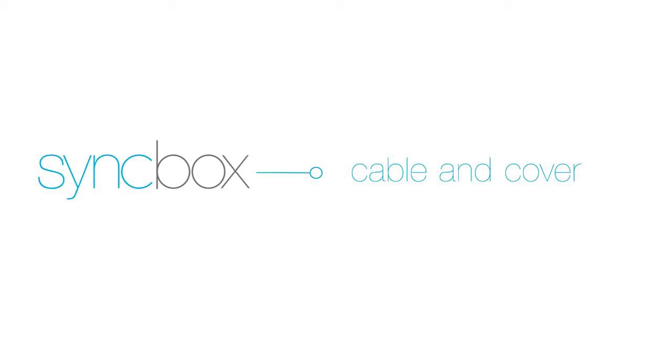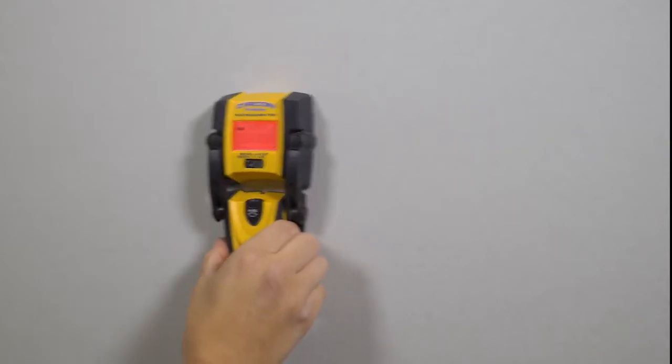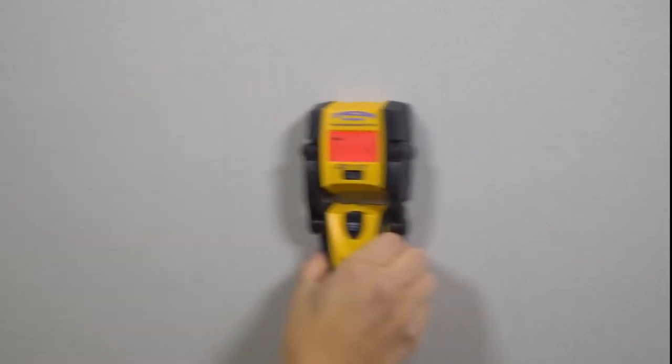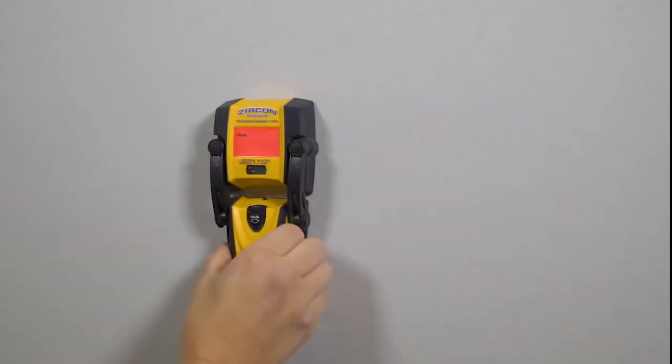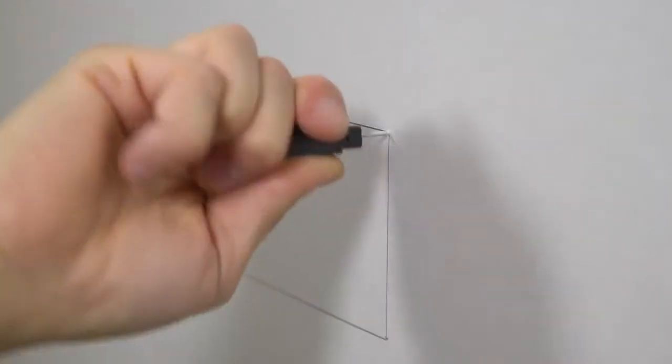OK, let's get started. Mark and cut the hole. Firstly, locate the desired position on the wall where you want to install the sync box. This can be done easily by using a stud finder. Using the template, mark the area to remove. Carefully mark and cut out the shape.